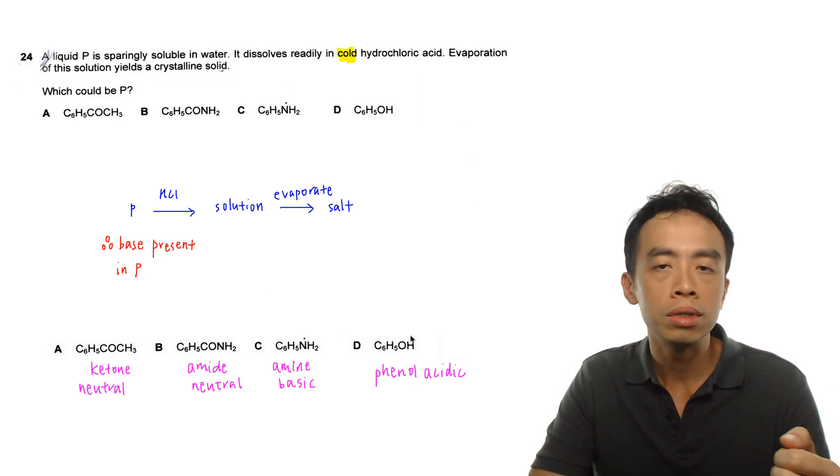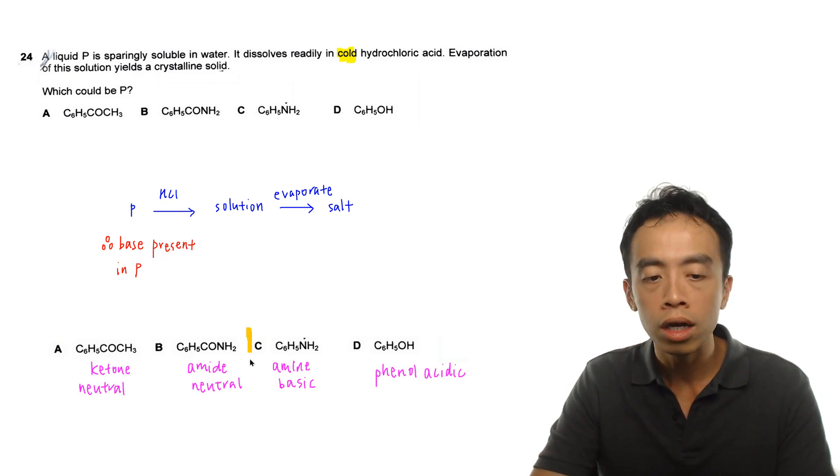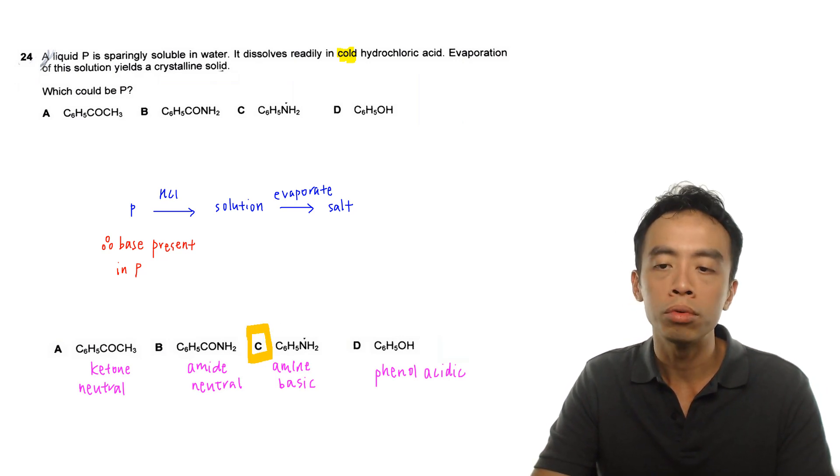So out of these four options A, B, C, D, the one which is alkaline and can undergo acid-base reaction with HCl, obviously has to be option C.